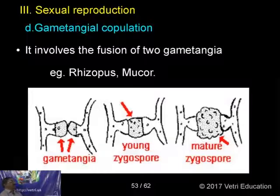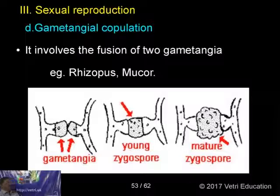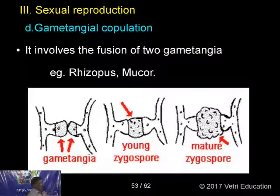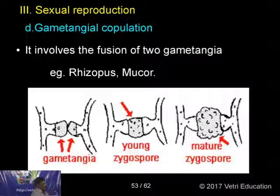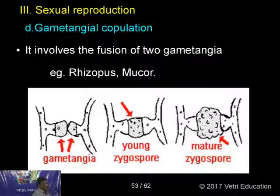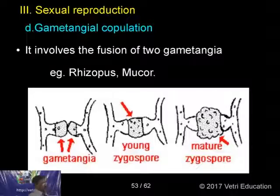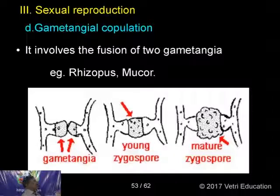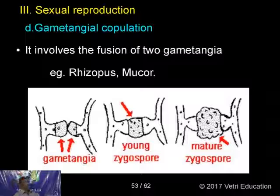Gametangial copulation involves the fusion of two gametangia. For example, in Rhizopus and Mucor, two filaments come together and produce outgrowths; those outgrowths join, and a cell wall forms. The lower cell is a suspensor and the upper one is a gametangium. Two gametangia join, nuclei fuse together, forming a zygote called a zygospore. The zygospore secretes a very thick wall and takes rest. This is gametangial copulation.